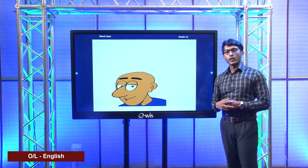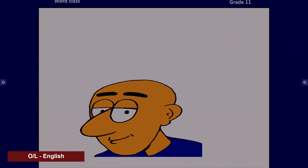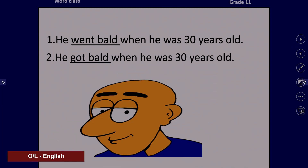This picture shows a bald-headed man. Let's see the sentences: He went bald when he was 30 years old. He got bald when he was 30 years old. Would it be right to say he went bald or got bald? Yes, the correct choice is he went bald. With the word bald, we use the verb either be or go. For example, he is bald, or my grandfather was bald. You can also say he went bald or he is going bald.